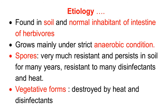Continuing with etiology — Clostridium tetani organisms are found in the soil and are normal inhabitants of the intestine of herbivores, so infection is present everywhere. Clostridium tetani grows mainly under strict anaerobic conditions. The organism occurs in two forms: spore forms and vegetative forms. The spore forms are very resistant and persist in soil for many years. Spores are resistant to many disinfectants and heat, while vegetative forms are destroyed by heat and disinfectants.